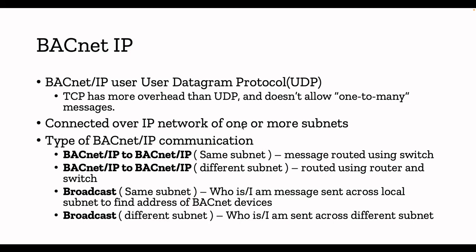BACnet/IP is connected over an IP network of one or more subnets. If you have BACnet devices that support IP, you can put all your devices in one subnet or create multiple subnets and deploy your BACnet devices. This helps segregate your devices into smaller categories and is a well-architected design. For example, if you have temperature sensors, humidity monitoring systems, and other control systems, you can create a separate subnet for each type of sensor.